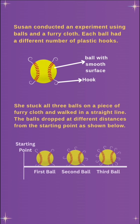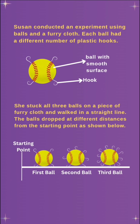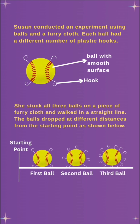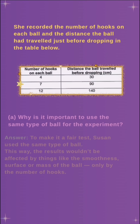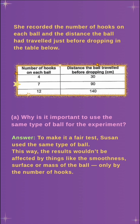Susan conducted an experiment using balls and a furry cloth. Each ball had a different number of plastic hooks. She stuck all three balls on a piece of furry cloth and walked in a straight line. The balls dropped at different distances from the starting point, as shown below.